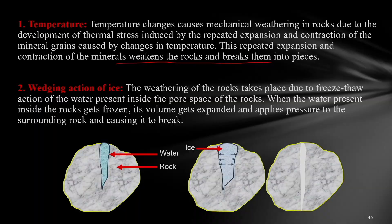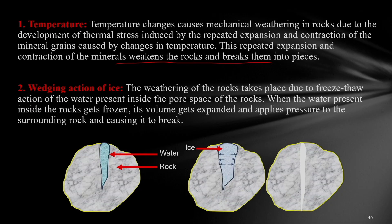Next is the wedging action of ice. The volume of ice is more than the volume of water. The rock has many pore spaces in which water can get accumulated. When there is a decrease in temperature, this water gets frozen into ice. As the ice volume is more than the water, the volume of the pore space has to increase, applying pressure all around the rock mass, causing the rock to break into small pieces.